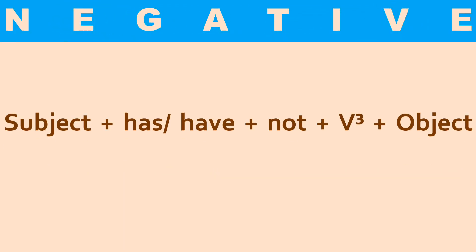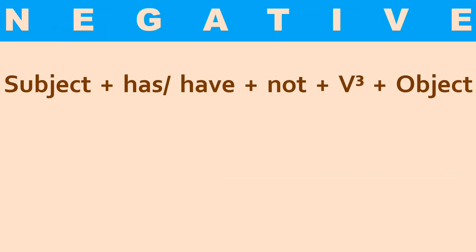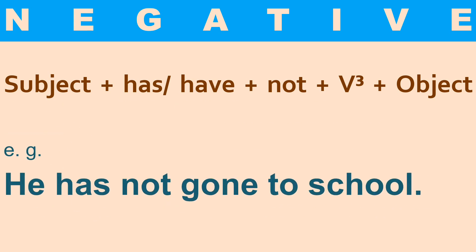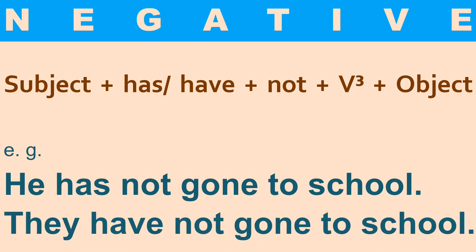Now let's see the negative sentence. The structure is: you use not just after the helping verb, and the rest of the things are the same. See the example: 'He has not gone to school.' After has or have, you add not, and in the same way you use the third form of the verb.